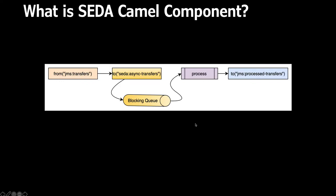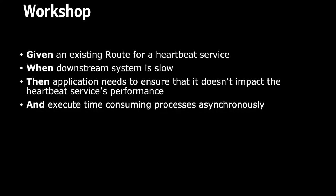One thing to remember in the SEDA model: the same message travels along the same route to the endpoint. If a processor sitting before SEDA modified the message, that same modified message will be traveling through SEDA. And if SEDA modifies something when sending back to a processor or route, the same modified message will carry through. This is a very nice way of breaking a synchronous route into an asynchronous one for faster processing.